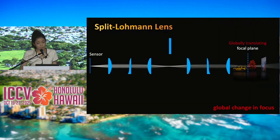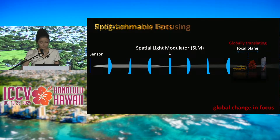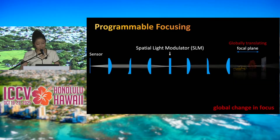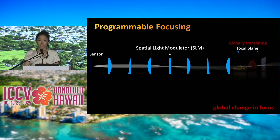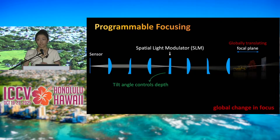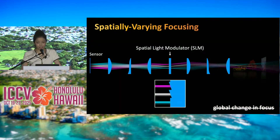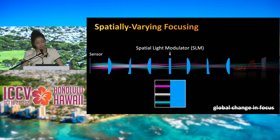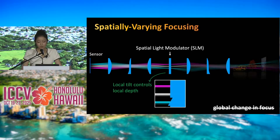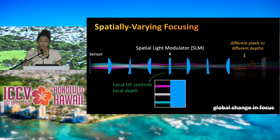By introducing a spatial light modulator (SLM) in the middle, we can redirect light that passes through it. By changing the tilt angle of the SLM, we effectively translate the cubic phase plates relative to each other, allowing us to control which depth to place the focal plane. Since the sensor and the SLM share a common image plane with pixel-to-pixel correspondence, for different local areas on the sensor, we can choose a local tilt and simultaneously focus different pixels to different depths.